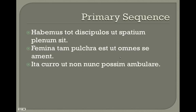There are two types: primary sequence result clauses and secondary sequence result clauses. A primary sequence is going to have a present, future, or future perfect verb in the main clause, and so the verb in the result clause is going to be in the present subjunctive — just like with purpose clauses. For example: 'Habemus tot discipulos ut spatium plenum sit' — we have so many students that the space is full. Or: 'Femina tam pulchra est ut omnes se ament' — the woman is so beautiful that everyone loves her. Or: 'Ita curro ut nunc non possum ambulare' — I run in such a way that now I am not able to walk.